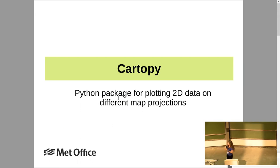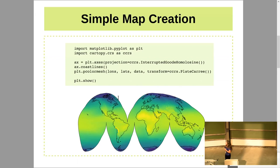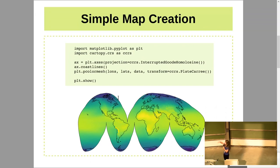I'm going to be speaking about Cartopy. Cartopy you can use to create maps in different projections and plot 2D data onto them. It interfaces with Matplotlib to make the plotting of data very simple. Here we've got a very simple example: we set up the projection that we want our data projected into, then we add pcolormesh data to that. We specify our longitudes and latitudes and our data array, and we tell Cartopy that the data was originally in a Plate Carrée projection and we want to reproject it into an interrupted Goode homolosine projection.